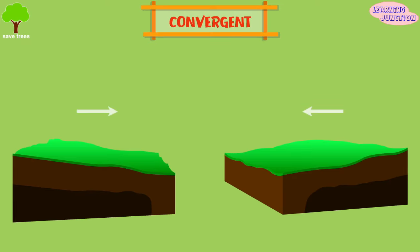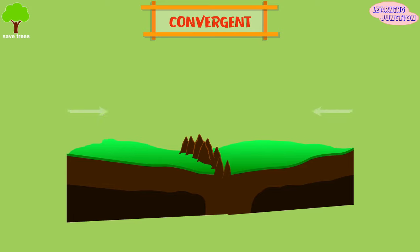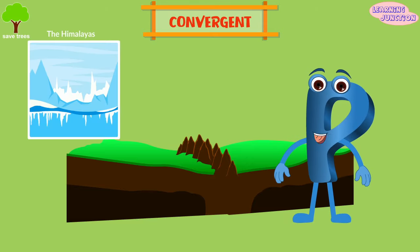Convergent. In this movement, the plates move towards each other and give rise to geographical structures like volcanoes and mountains. The Himalayas was built by this movement.